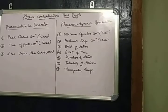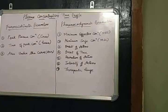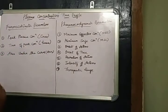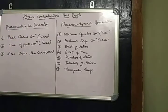The pharmacokinetic parameters — there are three of them: peak plasma concentration, known as Cmax; time of peak concentration, that is Tmax; and area under the curve, abbreviated as AUC. These are the three pharmacokinetic parameters.